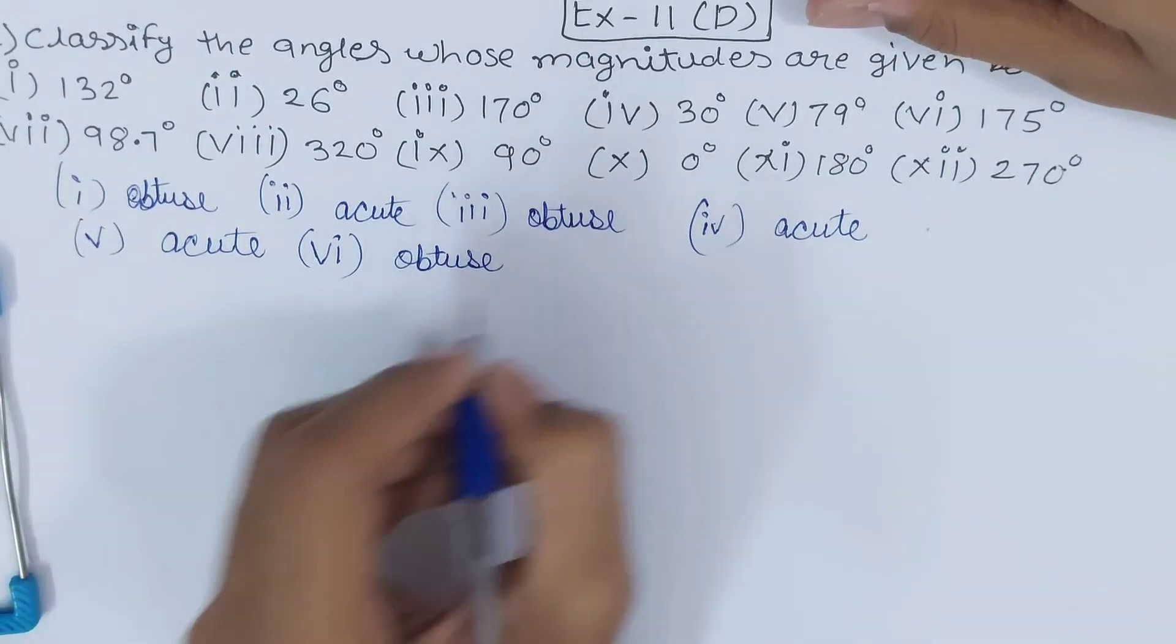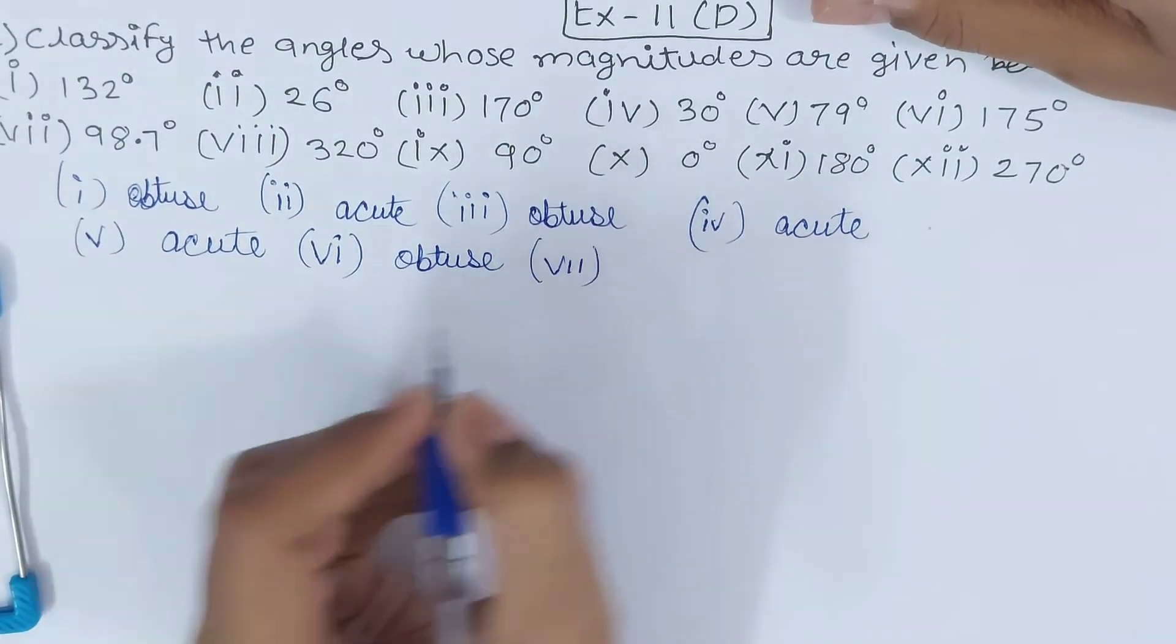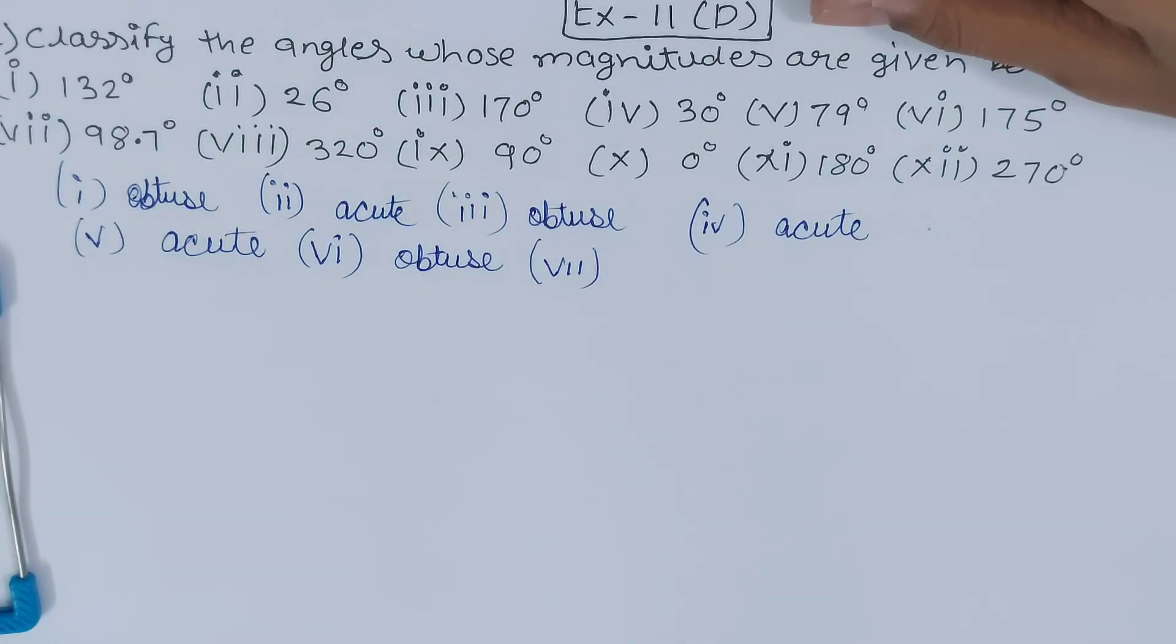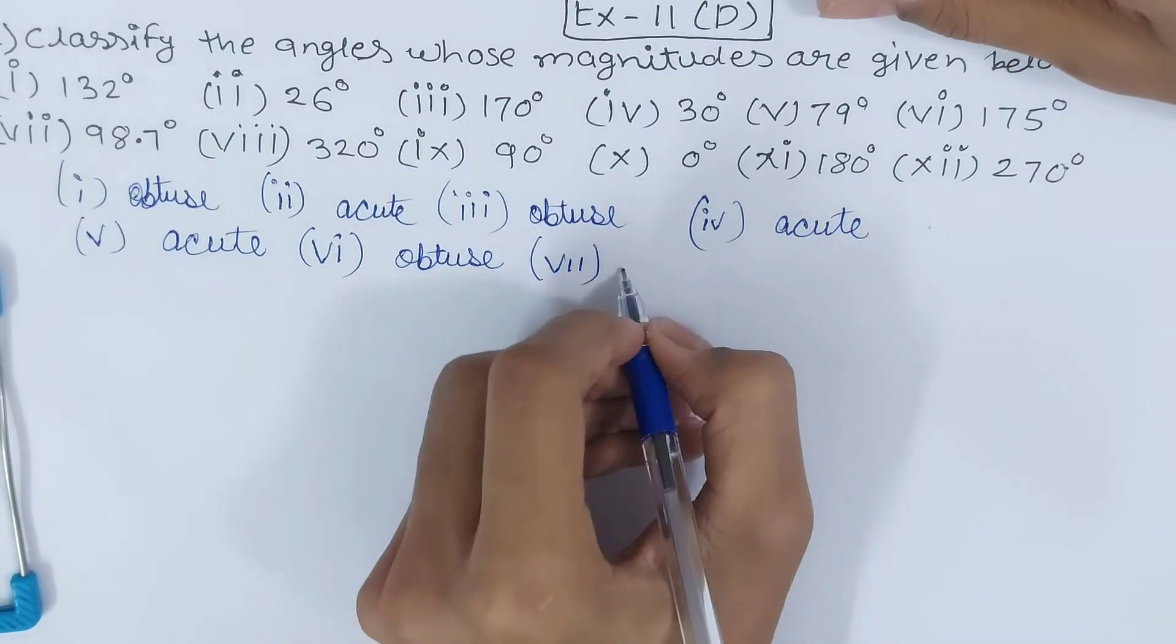All right, then part seven. 98.7 degrees - it's more than 90 and less than 180, so this becomes an obtuse angle.